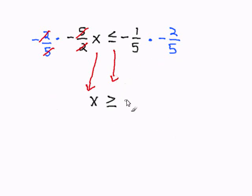Then I will multiply my two fractions on the other side of the inequality. Negative 1 fifth times negative 2 over 5 will get you to 2 over 25. And the negative times the negative will result in a positive.